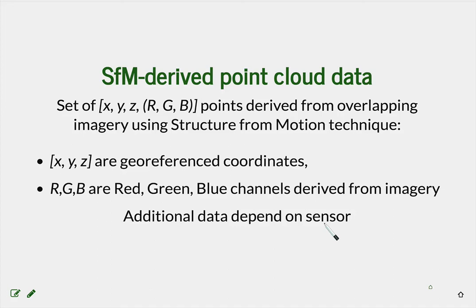Now let's compare with the structure from motion point cloud. Again we have XYZ coordinates derived from overlapping imagery, and because we are working with images we also get RGB. However, there is no return number, and classification also needs to be done separately. Additional data such as an infrared channel can be included if you have a multispectral camera.